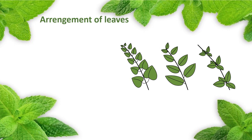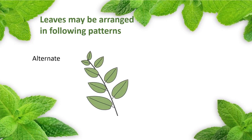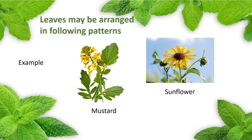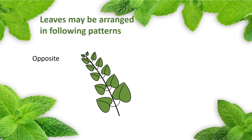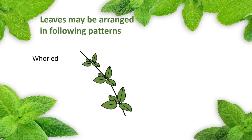Arrangement of leaves — the arrangement of leaves on the stem or branch is known as phyllotaxy. Leaves are arranged in such a way that they get maximum sunlight. Leaves may be arranged in different patterns. 1. Alternate — when one leaf is present at a node opposite to the previous leaf, leaves are arranged in alternating gaps around the stem. Example: mustard, sunflower. 2. Opposite — when two leaves arise at a node lying opposite to each other. Example: guava. 3. Whorled — when more than two leaves develop at each node and are arranged in a circle. Example: Oleander, Nerium.